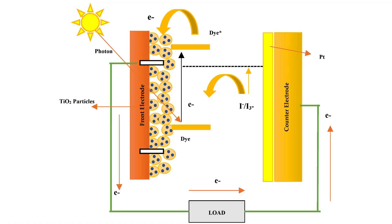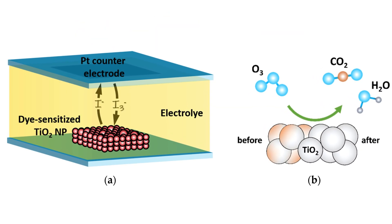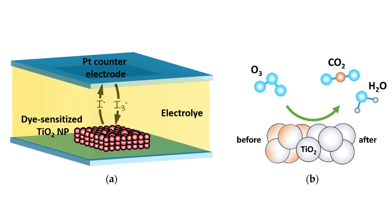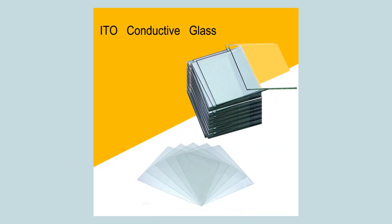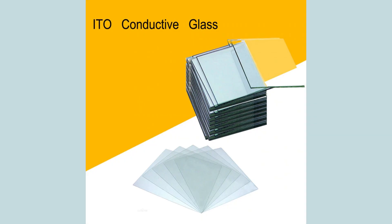The titanium dioxide is porous and nanostructured to provide a large surface area for the dye. Once in the TiO2, the electrons flow through the semiconductor to the transparent electrode, which serves as a conductive path. Transparent electrodes are typically made of transparent conductive oxide (TCO), such as indium tin oxide (ITO). They then travel through an external circuit to the counter-electrode (cathode), where they perform work by powering an external load.